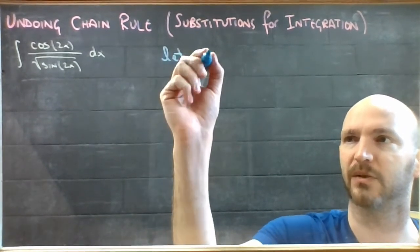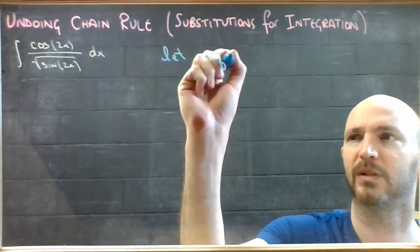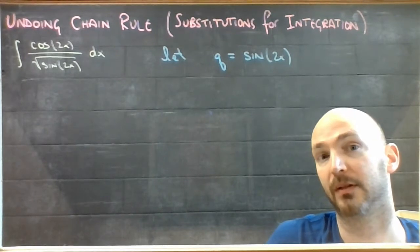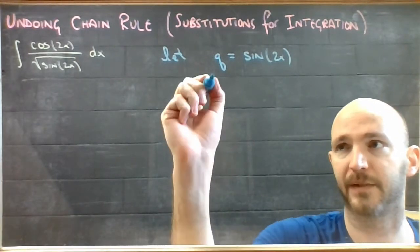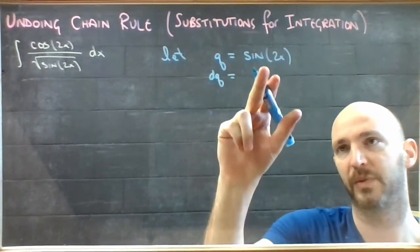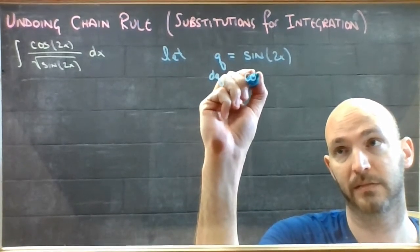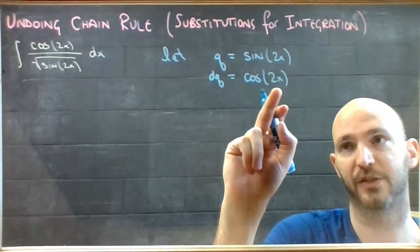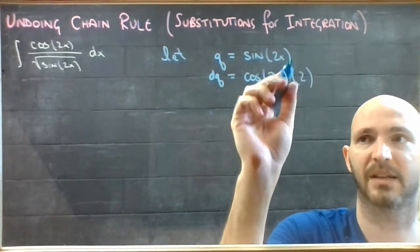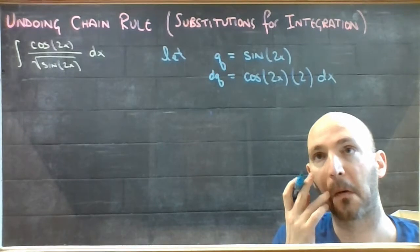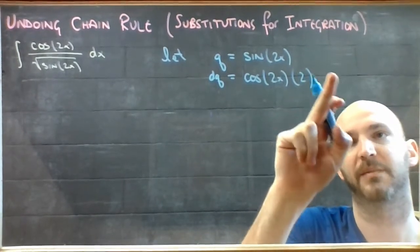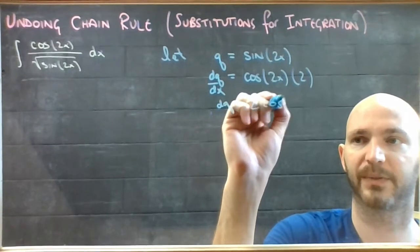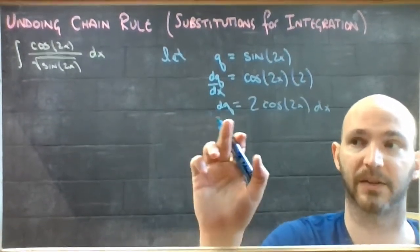Let q equal sine of 2x. The differential element dq would be the derivative of sine — cosine of whatever — and because it's a chain rule I need the derivative of the inside too. The derivative of 2x is 2, so dq equals 2 cos 2x dx.